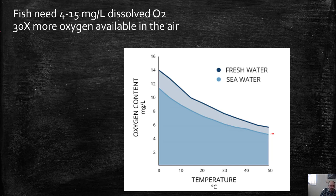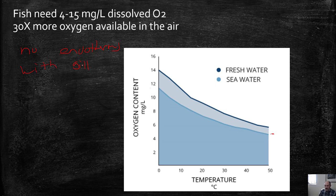This is a reason why there are no endotherms with gills. Endotherms have a high metabolic rate — we have to generate our own body temperature. There's not enough oxygen in the water to act as the final electron acceptor in respiration to keep an endotherm alive. So only ectotherms have gills. Of course, there are also ectotherms with lungs, as we saw with the frog or a reptile.